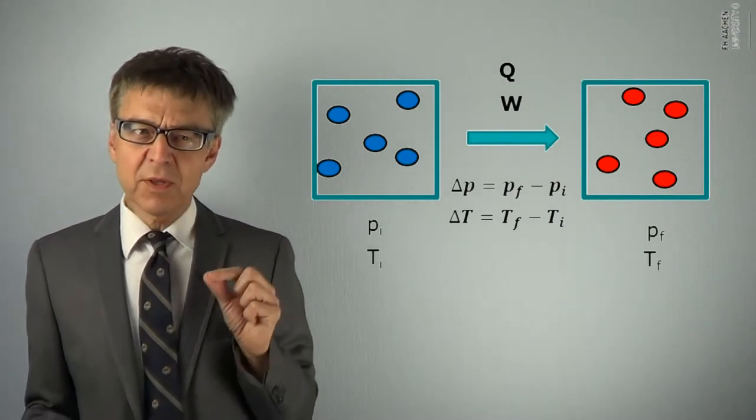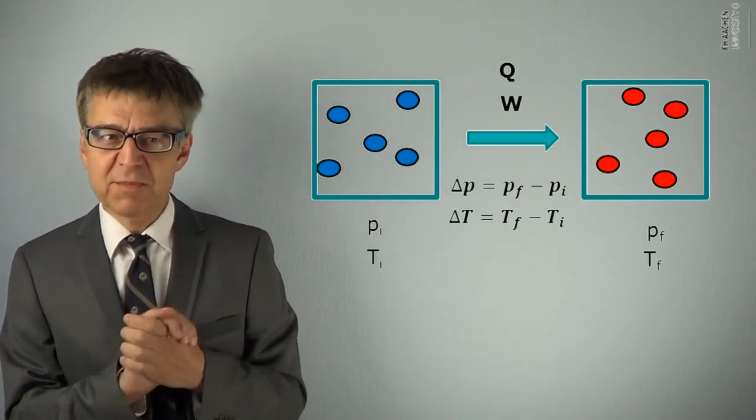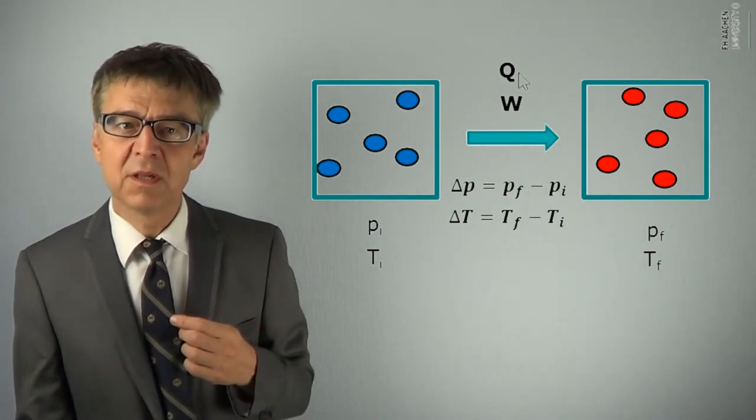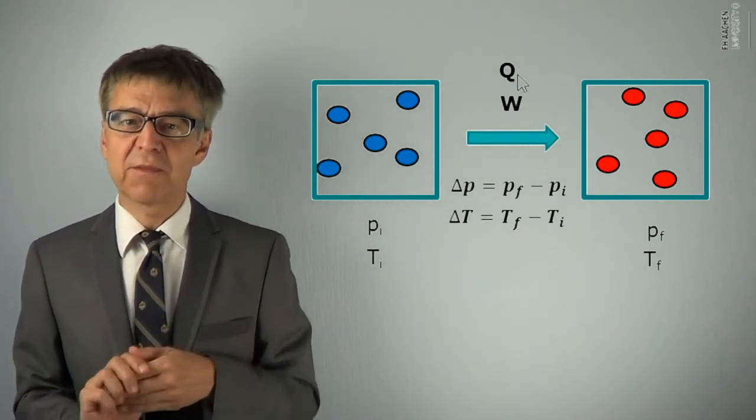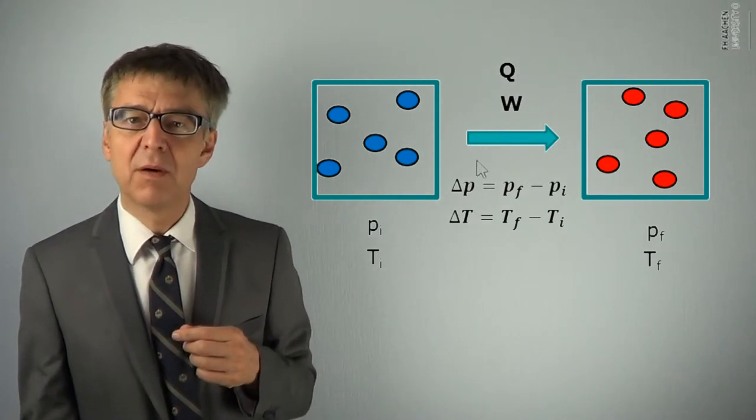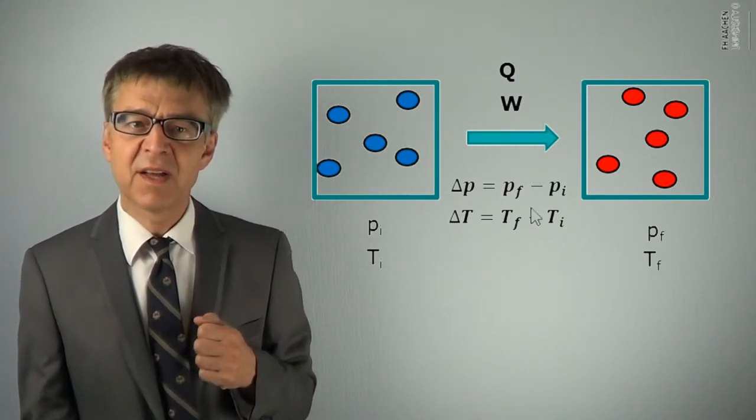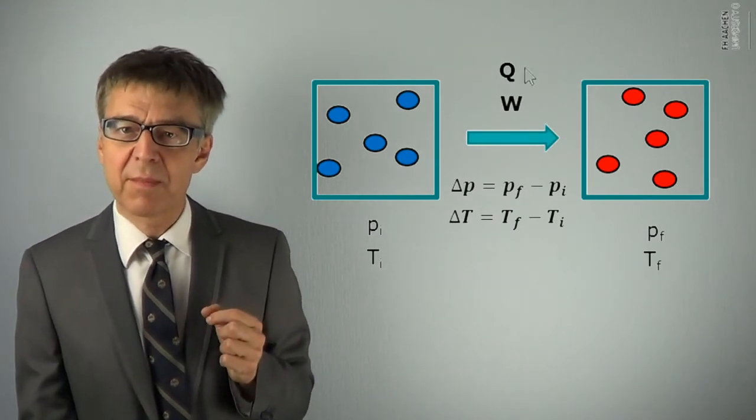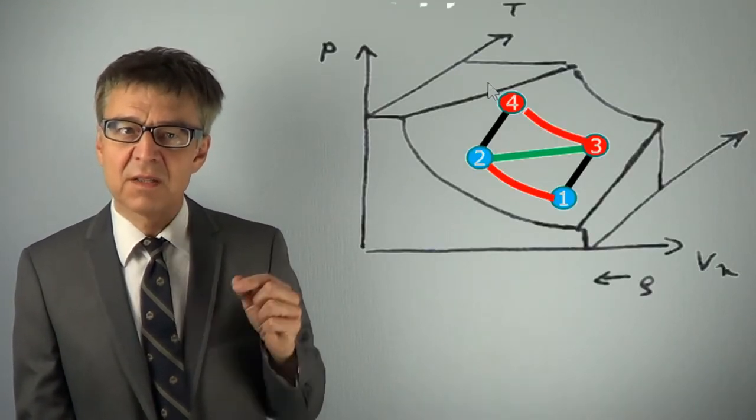An important difference between the process variables above the arrow and the changes of the state variables below the arrow is the path dependence of the process variables.